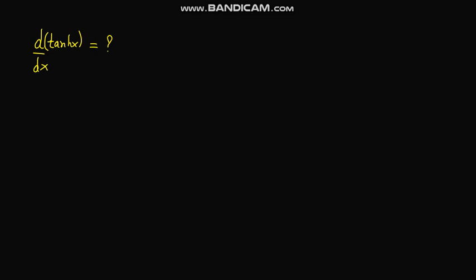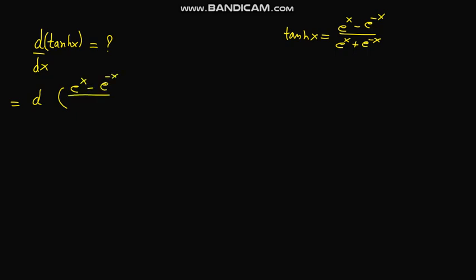In this video we have to find the derivative of hyperbolic tan x. We know that hyperbolic tan x equals e to the power x minus e to the power negative x, upon e to the power x plus e to the power negative x. So we set up d/dx of e to the power x minus e to the power negative x, upon e to the power x plus e to the power negative x.